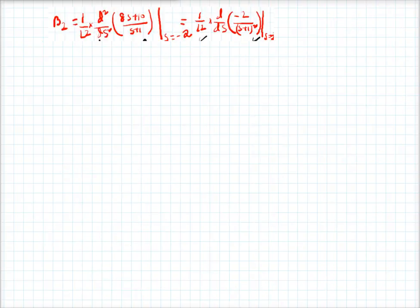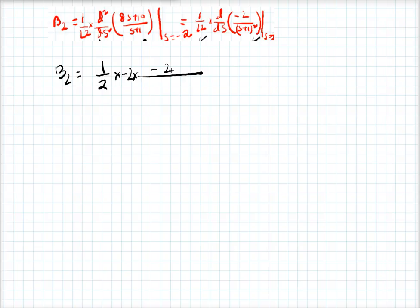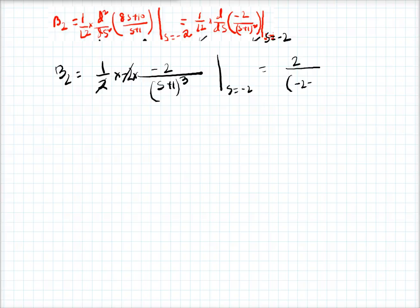So B2 = (1/2) × d/ds of -2(s+1)^(-2). Taking the derivative: -2 × (-2)(s+1)^(-3) = 4(s+1)^(-3). Dividing by 2: 2 over (s+1)³. Evaluating at s = -2: 2 over (-1)³ = 2/(-1) = -2. So B2 equals minus 2.